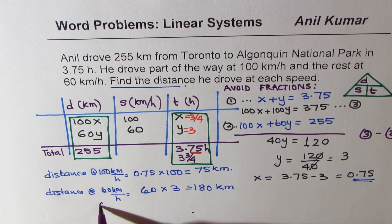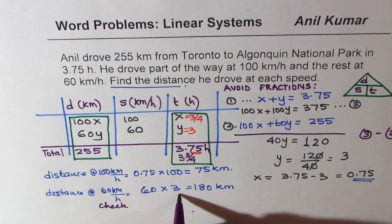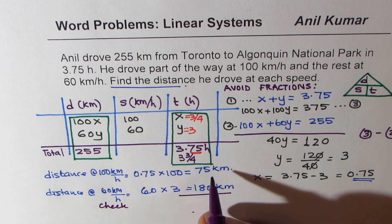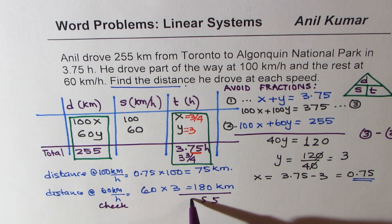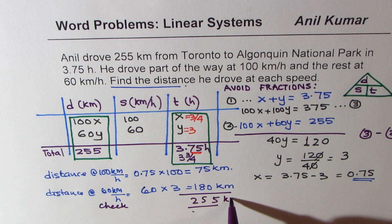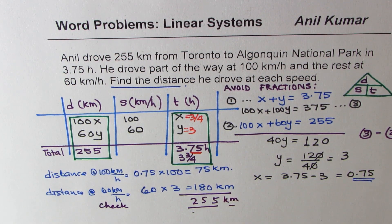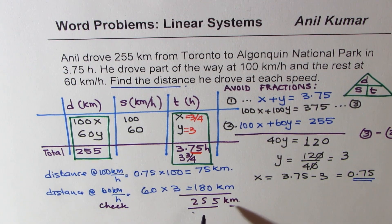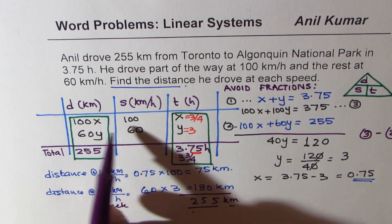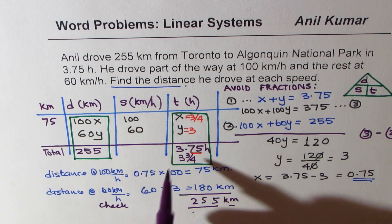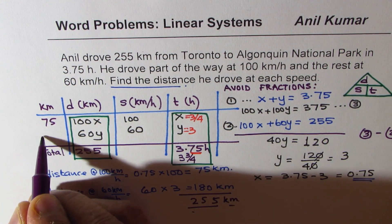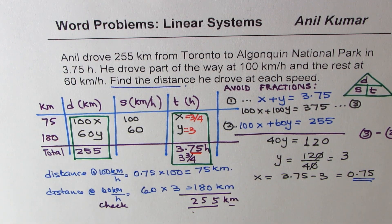And now you can also check your result by adding them. If you add 5 plus 0 is 5, 7 plus 8 is 15, and 1 plus 1 is 255 kilometers. So we get our answer, and that is: distance traveled at 100 kilometers per hour is 75 kilometers, and that at 60 kilometers per hour is 180 kilometers. That is a neat solution to such a question.